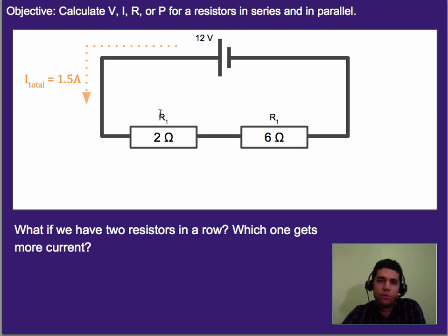But what happens if the resistors are in a row? Meaning, what happens to the current if we just have two resistors, but there's only one path like this? Which one gets more current?